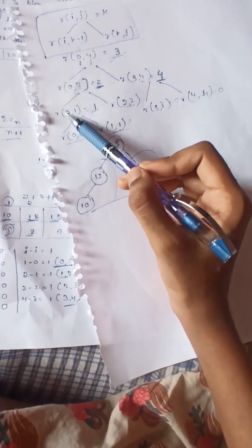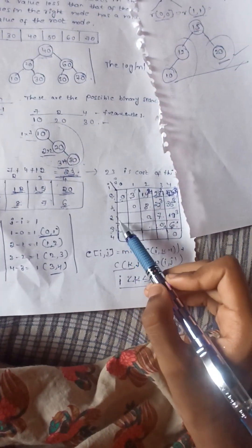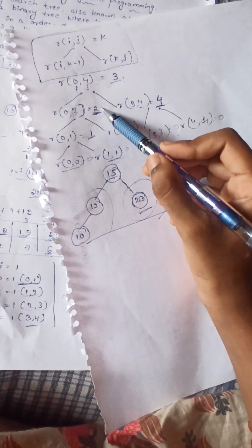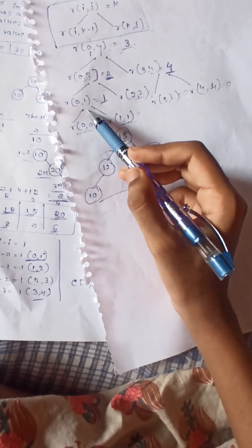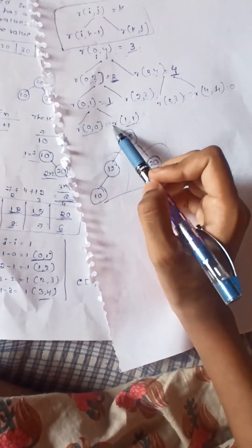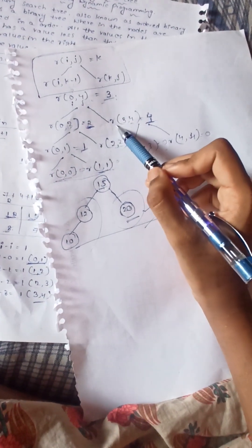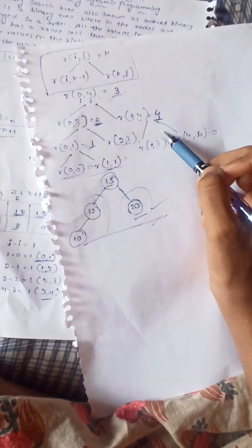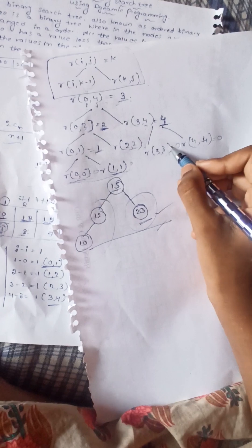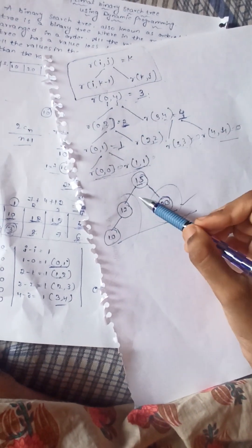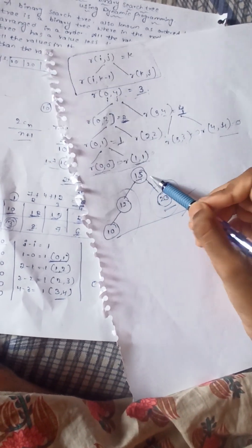Next, R(0,1) gives the first root, which is the first key. For the right side, R(0,0) and R(1,1) terminate here. For R(3,4), the left side is R(3,3) and the right side is R(4,4). These values become 0 and terminate.